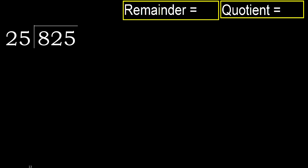825 divided by 25. 8 is less, therefore next. 82 is not less, therefore we work with 82. 25 multiplied by which number is nearest to 82, but not greater?